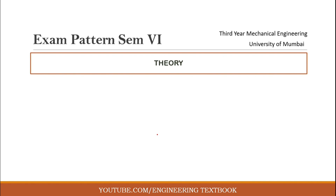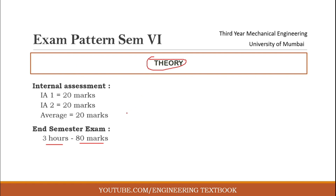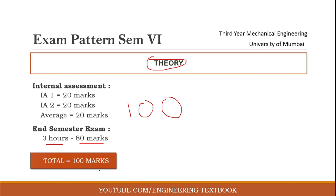Now let's see the exam pattern for semester 6. For theory, the exam pattern includes Internal Assessment: there are two internal assessments — IA1 of 20 marks and IA2 of 20 marks, also known as unit tests conducted mid-semester. The average of these marks counts as 20 marks. The End Semester Examination is 3 hours for 80 marks. Therefore, the total marks for a theory subject is 100 marks: 20 for internal assessment and 80 for the end semester examination.